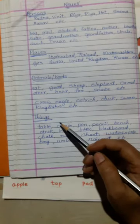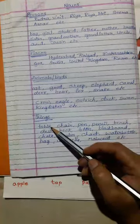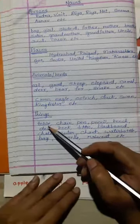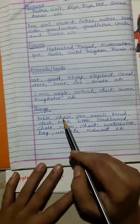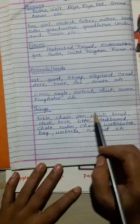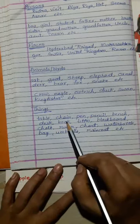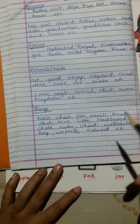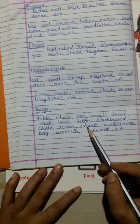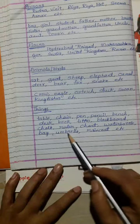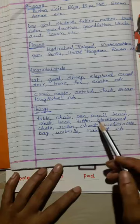Names of things — when you go to your classroom, you can see many things: table, chair, pen, pencil, bench, desk, book, tiffin, blackboard, chalk, ruler, chart, water bottle, bag, umbrella, raincoat — these are all called nouns.